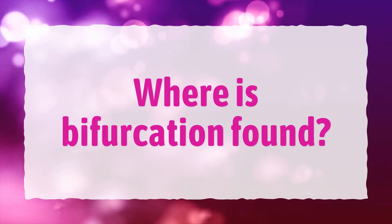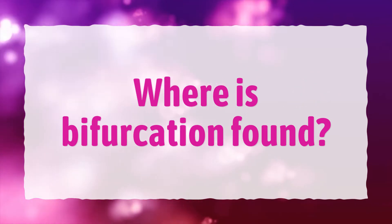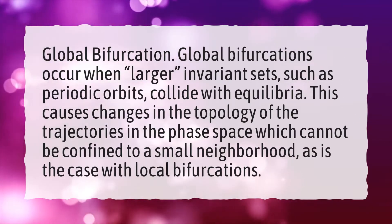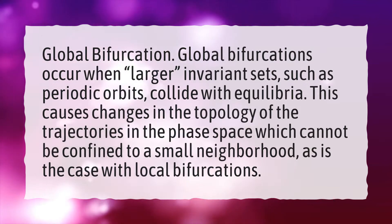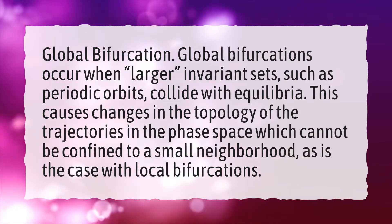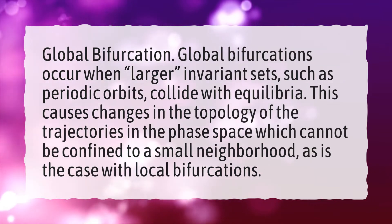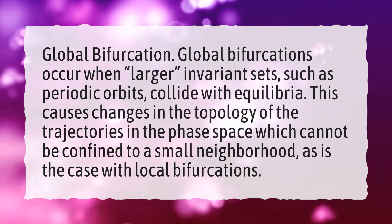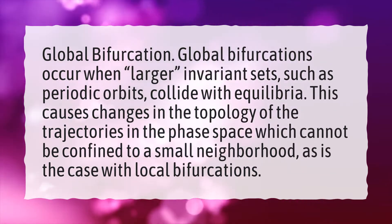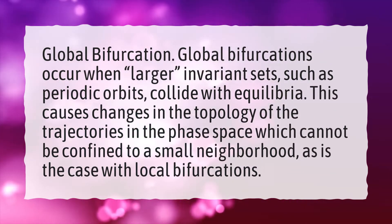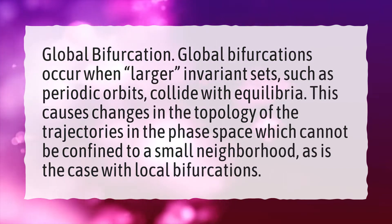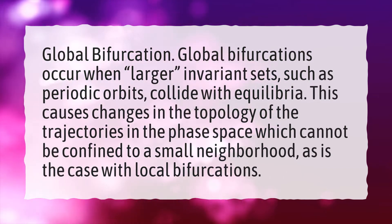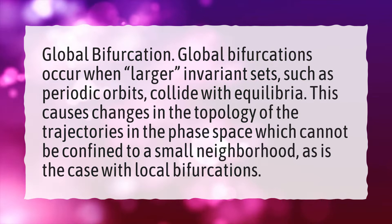Where is bifurcation found? Global bifurcation. Global bifurcations occur when larger invariant sets, such as periodic orbits, collide with equilibria. This causes changes in the topology of the trajectories in the phase space which cannot be confined to a small neighborhood, as is the case with local bifurcations.